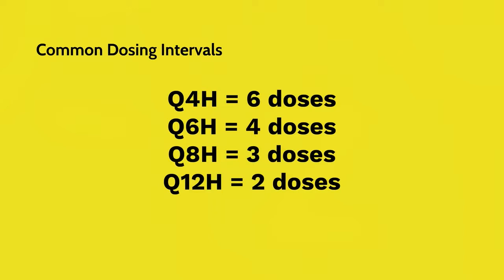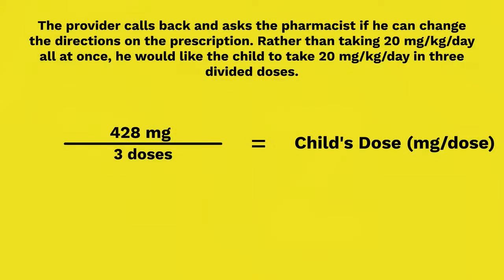Here are some common dosing intervals: every 4 hours equals 6 doses, every 6 hours equals 4 doses, every 8 hours equals 3 doses, and every 12 hours equals 2 doses. So if the physician had written that the patient should take the medication every 12 hours, you would use 2 doses in the denominator rather than 3.